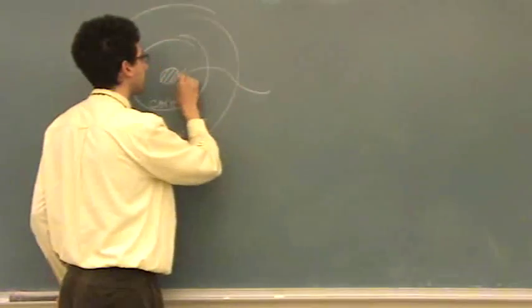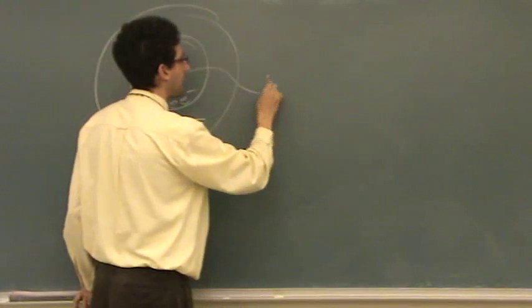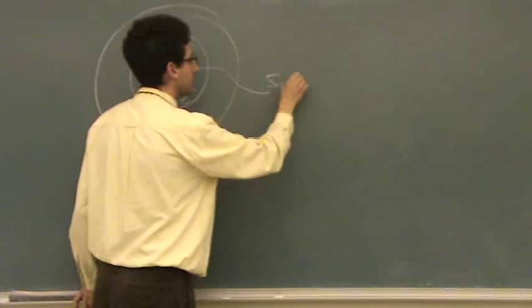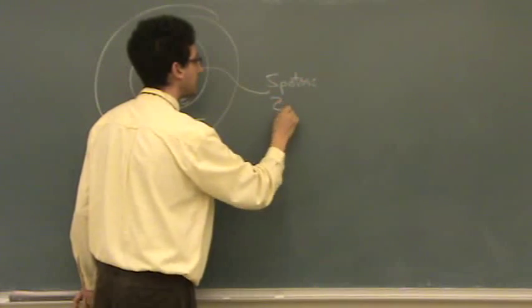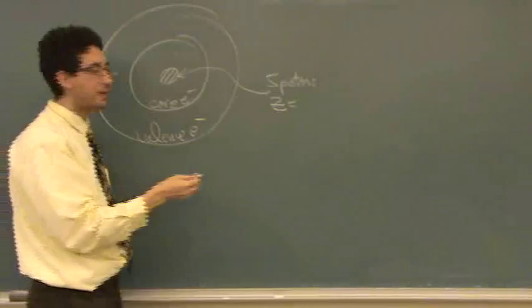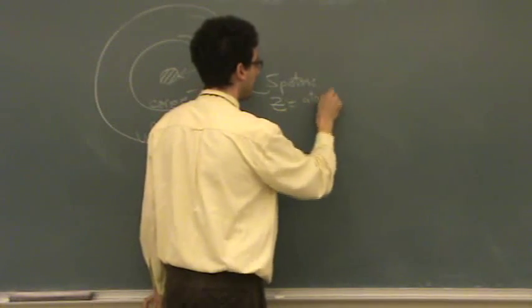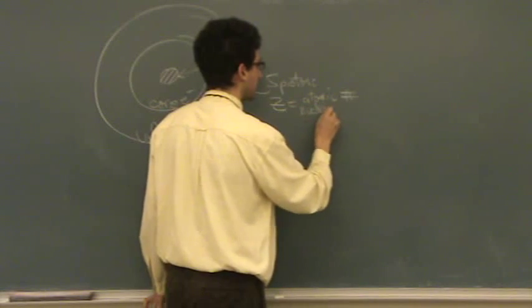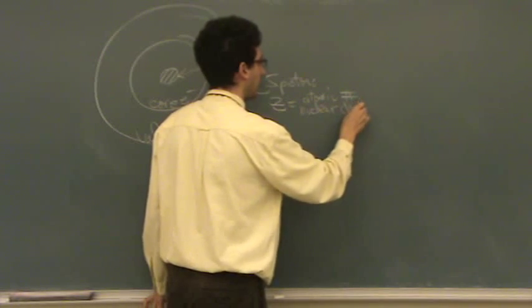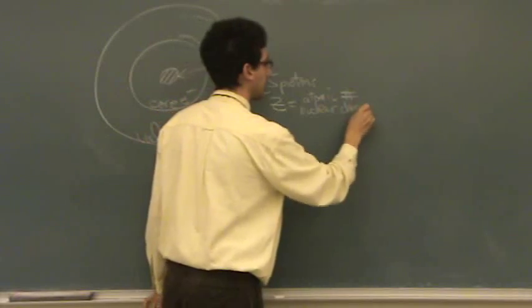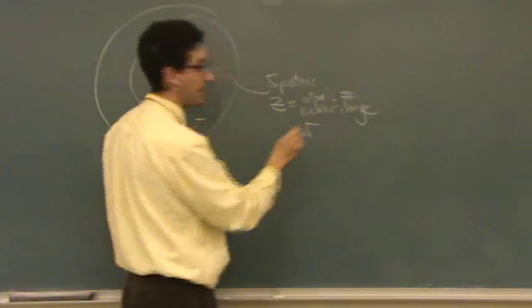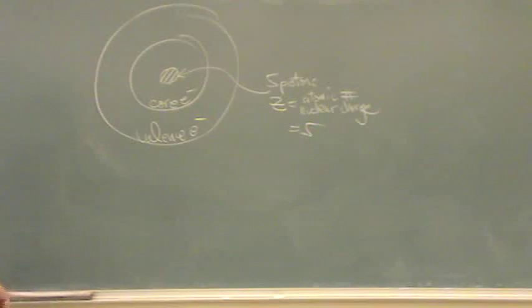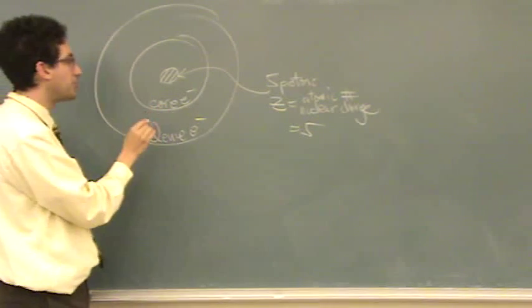Well, let's say this has five protons. That means that Z, the atomic number, so this is called the atomic number, or it's also called the nuclear charge. Essentially, nuclear charge is the number of protons, in this case five. So you look at your periodic table, the smaller number, that's Z, the number of protons.